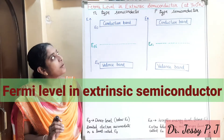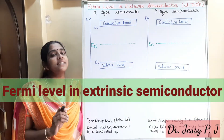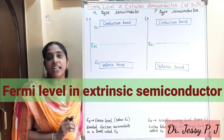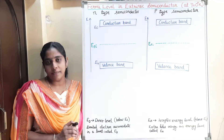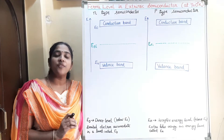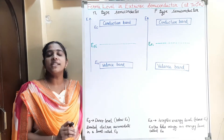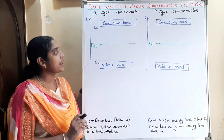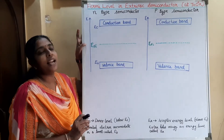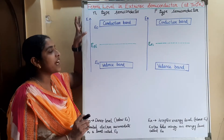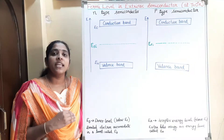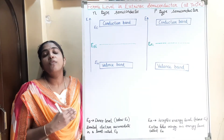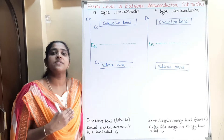Today we can discuss about Fermi level in extrinsic semiconductor. In the last video we have seen the Fermi level in intrinsic semiconductor. The Fermi level in a semiconductor is the average energy of all the charge carriers that participate in the conduction process. In an intrinsic semiconductor, this Fermi level lies in the middle of the energy band gap. In an extrinsic semiconductor — that is in an n-type and p-type semiconductor — where will be the position of this Fermi level?